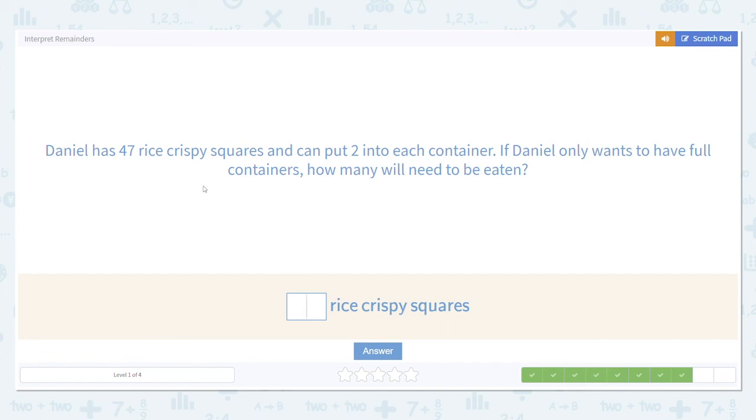Daniel has 47 Rice Crispy squares and can put two into each container. If Daniel only wants to have full containers, how many will need to be eaten? Again, we're dividing 47 by two and looking for the remainder.